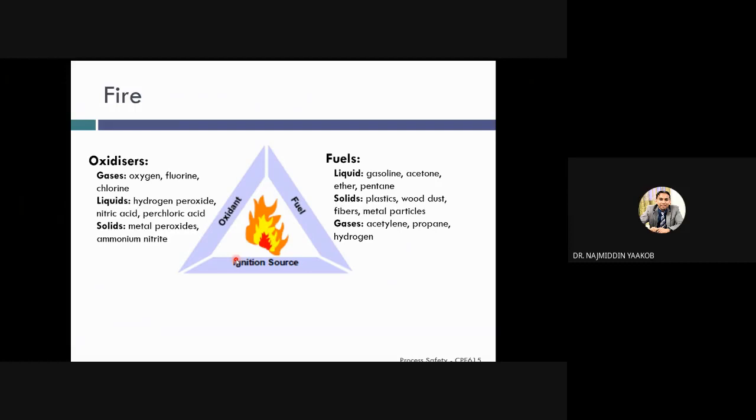This is the triangular diagram, or fire triangle diagram. In order for fire to take place, there are three main parameters that need to occur at the same time. Number one is the oxidant: oxygen, chlorine, liquid hydrogen peroxide, or solid metal peroxide or nitrate. Second is the fuel: gasoline, acetone, plastic, wood, gases. And the third one is the ignition source: spark, flame, static electricity. If one of these does not exist or is prevented, there will be no fire.